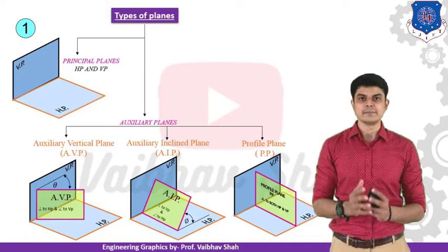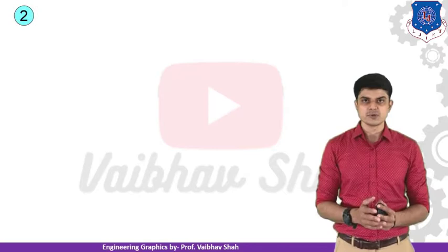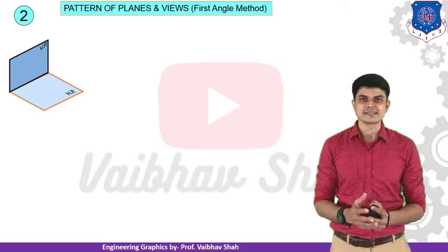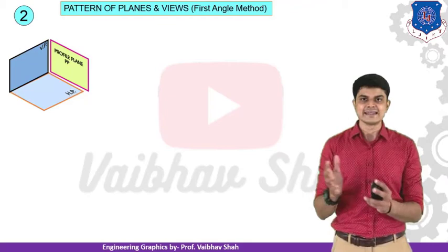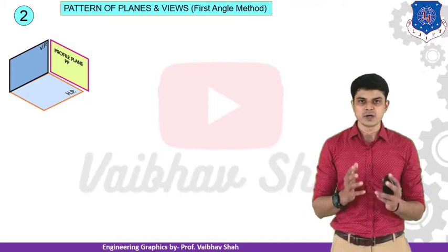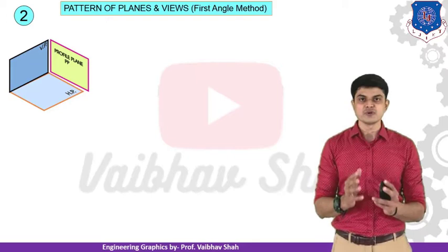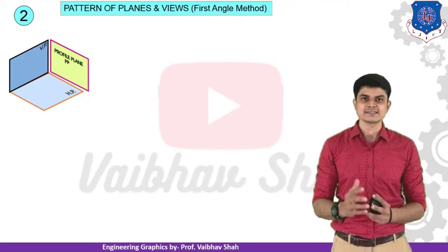Throughout this chapter we will be dealing with three planes: horizontal plane, vertical plane, and the profile plane. Now, the pattern of planes or views — how do we adjust the pattern of planes while drawing orthographic projection? We have the horizontal plane, the vertical plane, and the profile plane placed at the conjunction of HP and VP. We convert this three-dimensional figure into a two-dimensional figure by rotating the horizontal plane and the profile plane around the vertical plane.